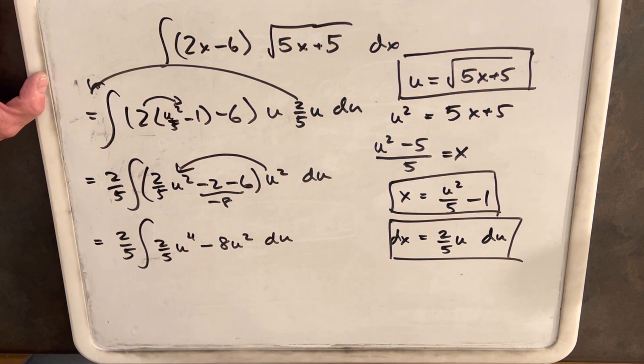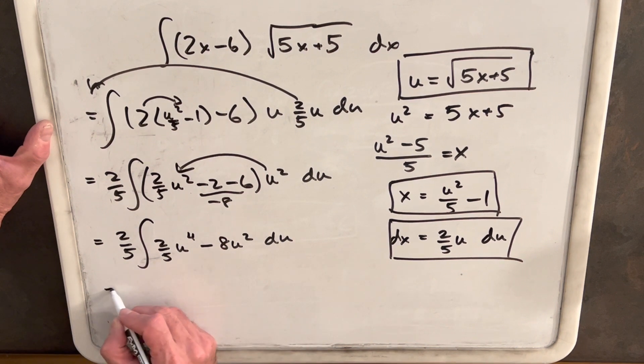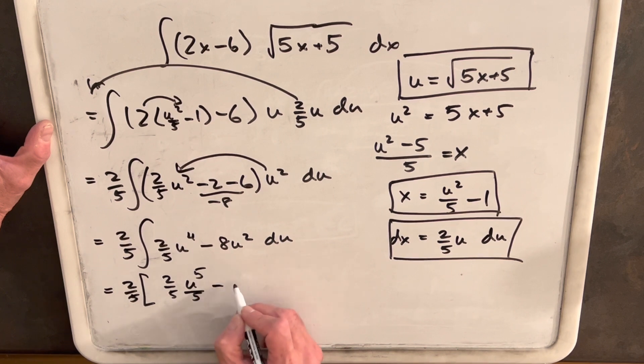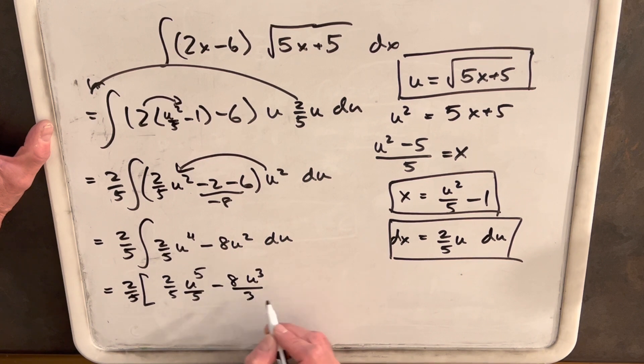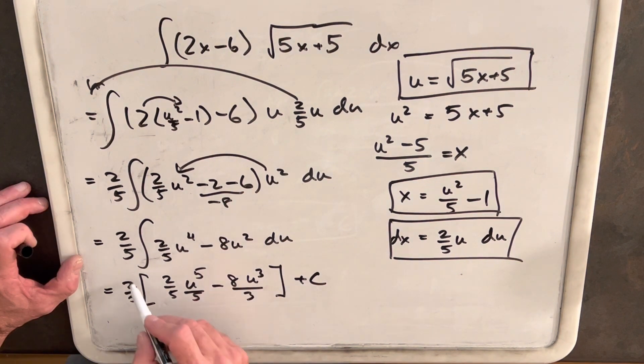Okay. Now we can just integrate, because we've got this cleaned up the way we like it. So 2 fifths, here, let's put a bracket so we don't get confused. Then 2 fifths, just power rolling this. So this is going to be u to the 5th over 5, minus 8, power roll, u to the 3 over 3, bracket plus C.